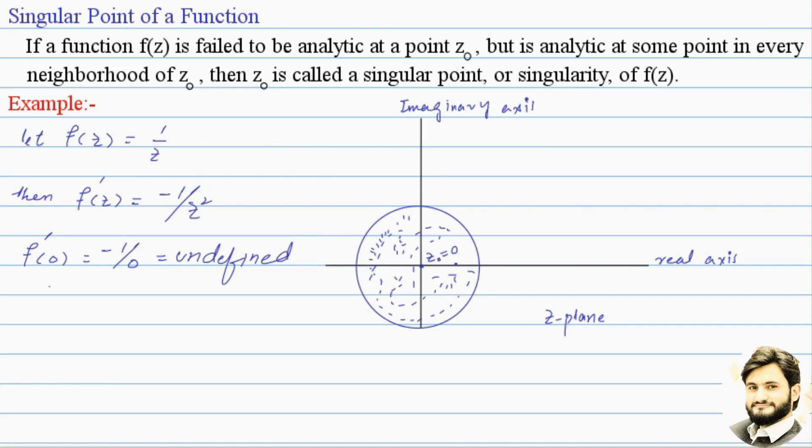So we can say that z₀ = 0 is the singular point of the function f(z). Hence, the singular point of f(z) = 1/z is z = 0.